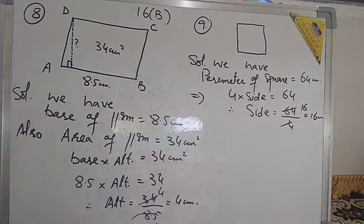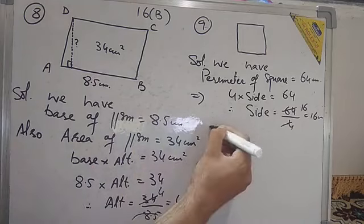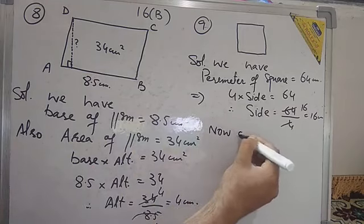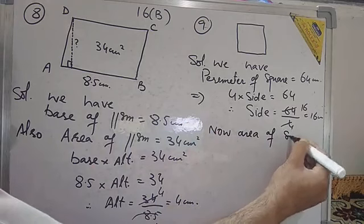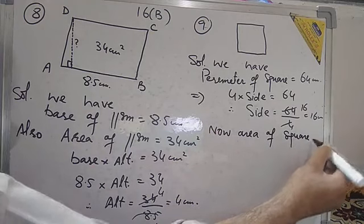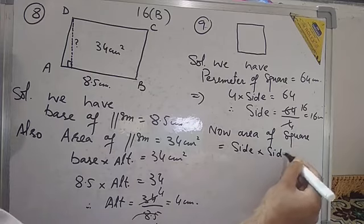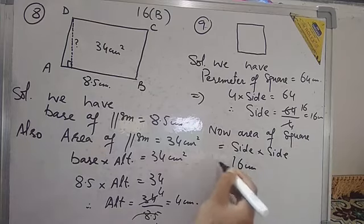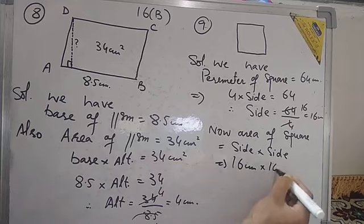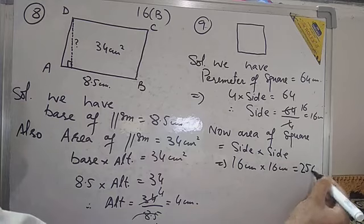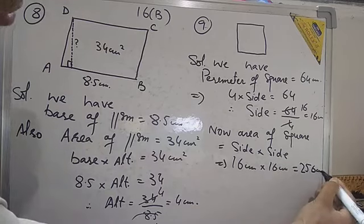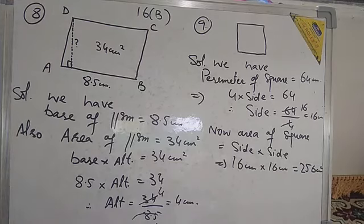Therefore, side is equal to 64 divided by 4, which gives us 16 cm. That is the length of the side. Now, the area of the square formula is side into side. Side is 16 cm, so 16 × 16 is 256 cm². That was question number 9.